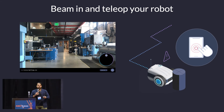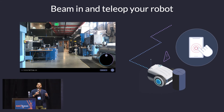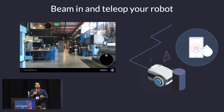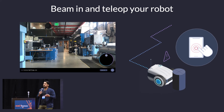Being able to beam in and teleoperate your robot — I don't know how many people here have had the 'drunk robot' experience where the robot is driving in a zigzag line down the hallway. If your robot gets stuck in a corner or behind a person, occasionally you need to beam in and take direct control. A lot of the tooling we see is engineer-specific: SSH to the robot, open a ROS tool and send command velocity directly. That doesn't work for an operator, and it doesn't work if you have a call center.